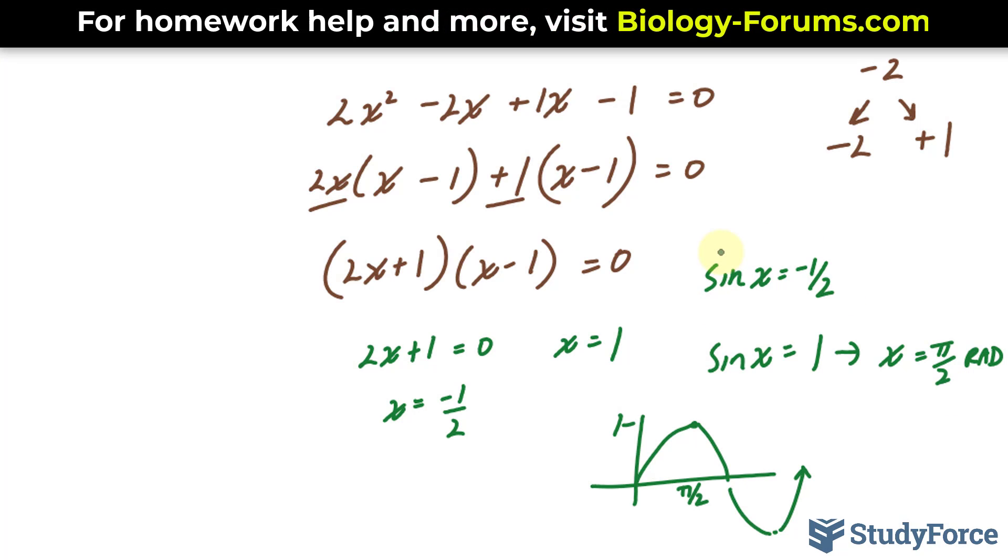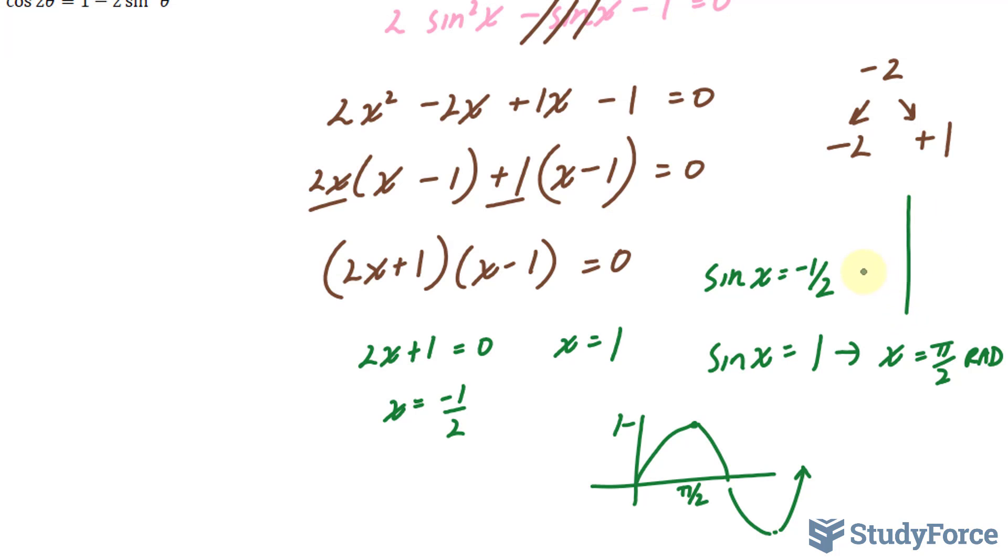This one is the more tricky part. We have a ratio that's negative one over two. Remember the cast rule. The cast rule tells us that sine is positive in the first and second quadrant, a and s. And it's negative in the third and the fourth quadrant. So our unknown angle has to be in the third and the fourth quadrant because this ratio is negative.